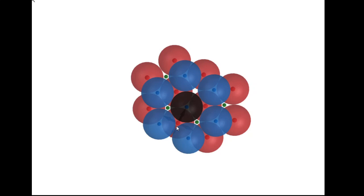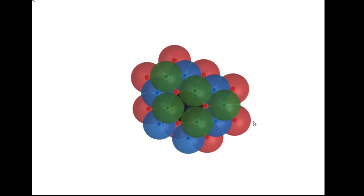Now I will bring the topmost layer and see what kind of neighborhood this black sphere has with it. You can see that these three green spheres are in the neighborhood of the black sphere and they are making an upward triangle. So in the layer below it there is a downward triangle neighborhood, in the layer above it there is an upward triangle neighborhood, and in its own layer it has a hexagonal neighborhood.